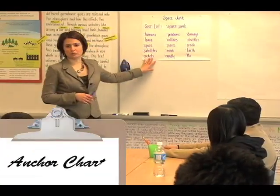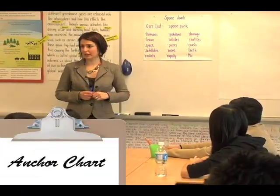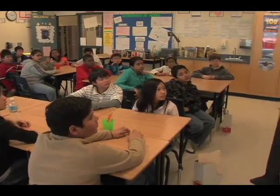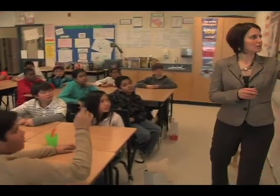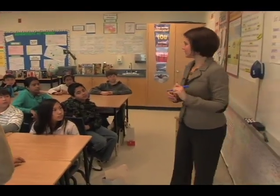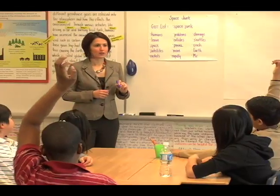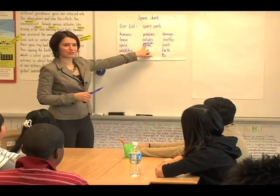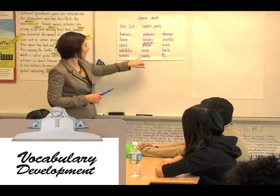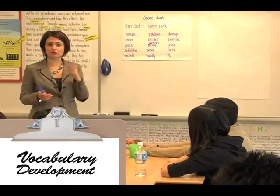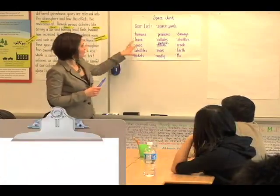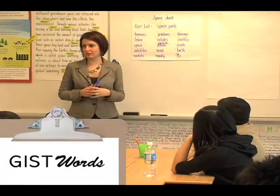So here we have our gist words that we just finished highlighting on the text. Now the one thing I noticed is that, remember we used the synonym for pieces? What word could we take that out, and what word can we replace that with? Particles. So I made sure to use a synonym for pieces — particles — and I already included 'rapidly' instead of 'fast'. So those are two synonyms that we used in our gist list. Now we're going to turn this gist list into our summary.